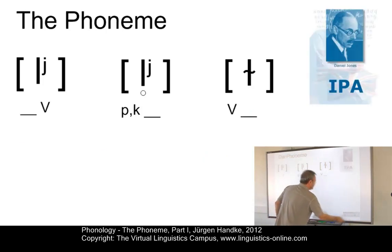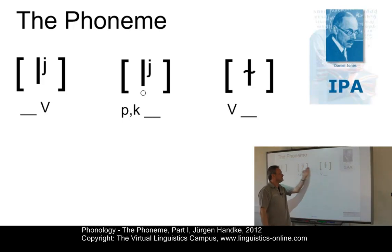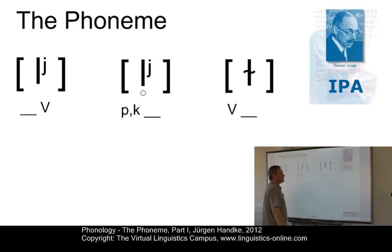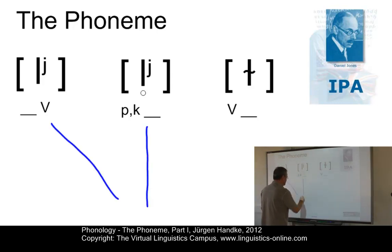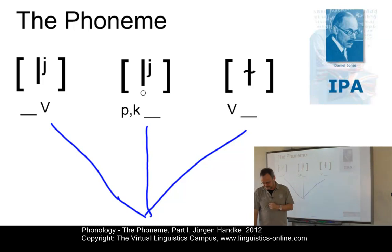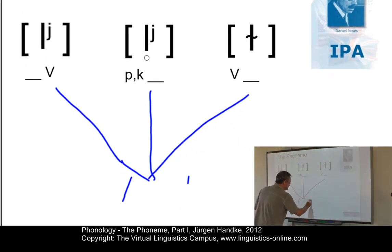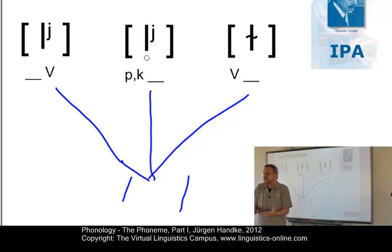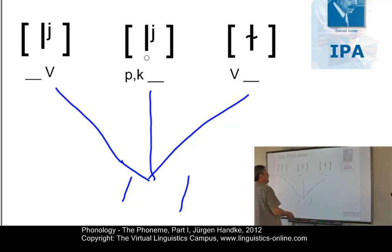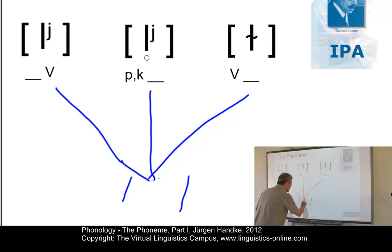So what are we going to do with these findings? We can now define these three phones as members of one family. They occur in complementary distribution and they are phonetically similar, so they constitute one family. This family is called the phoneme. The phoneme is represented in square brackets. The phoneme is an abstract unit — we do not pronounce phonemes, we pronounce phones. The abstract unit is normally represented by the simplest character available in the Roman alphabet, so here we suggest L without any diacritics as the symbol for the phoneme.